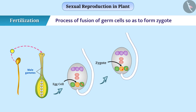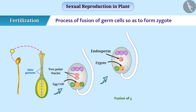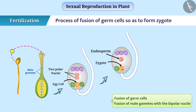Similarly, the second male gamete fuses with two polar nuclei to form an endosperm. Since there are two types of fusion in the embryo sac — fusion of germ cells and fusion of male gamete with the polar nuclei — such kind of fertilization is called double fertilization.